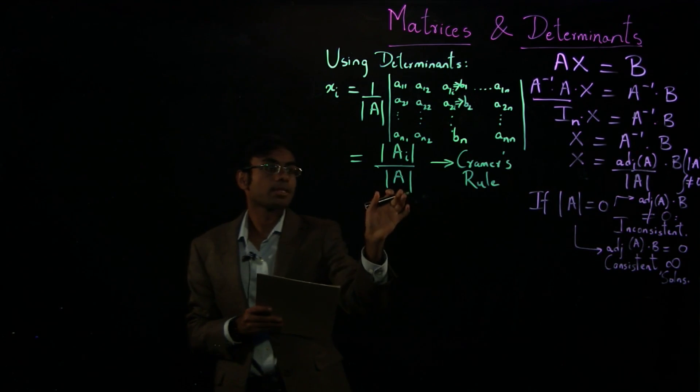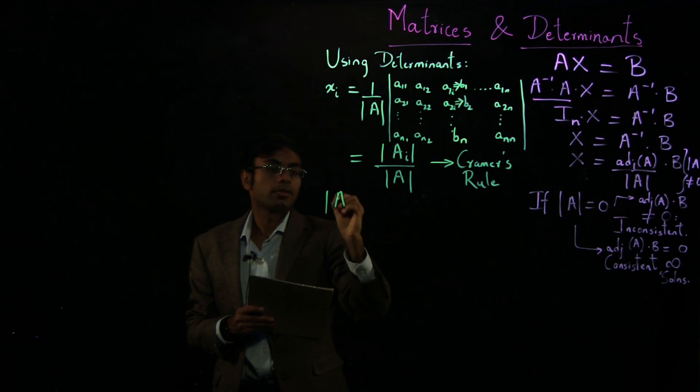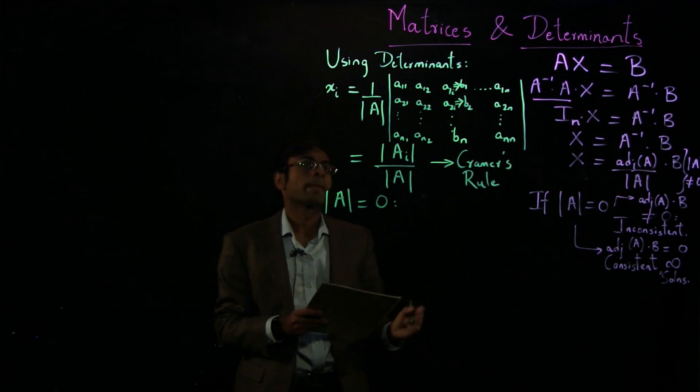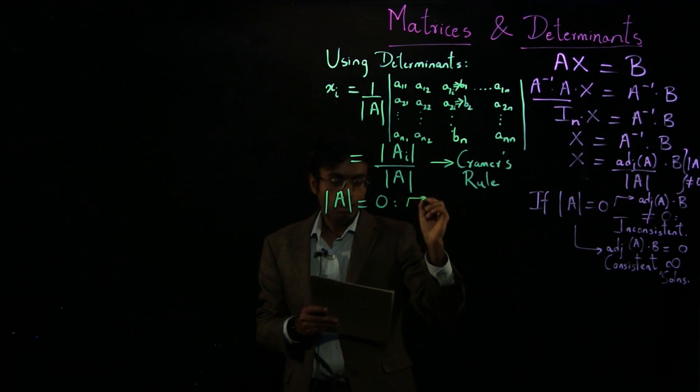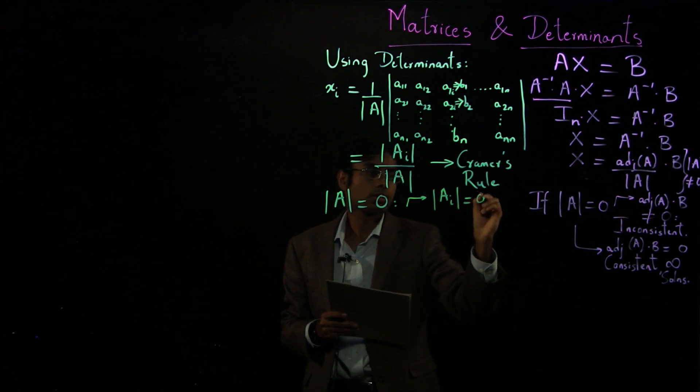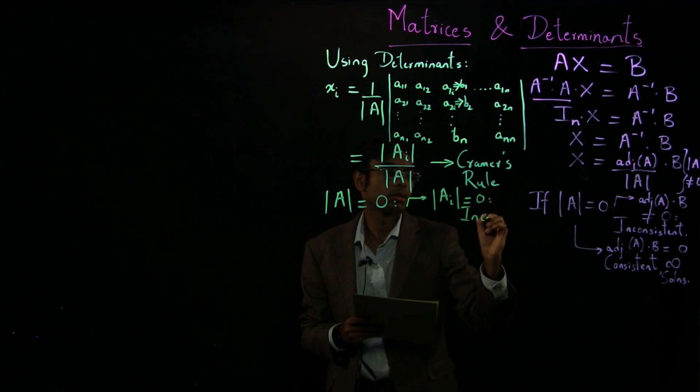Now again, what happens if the denominator is zero? So the special case, if a equals zero. Well, again, look at the numerator. If any of the numerators is also zero, inconsistent set of equations. There is no solution.